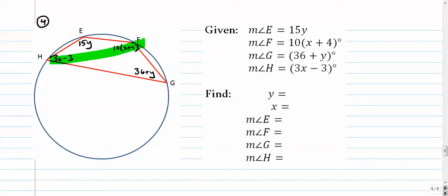All right, so let's do these two first. These two green ones add up to 180. I'll do it over here. 3x minus 3 plus 10 times the quantity x plus 4 equals 180.